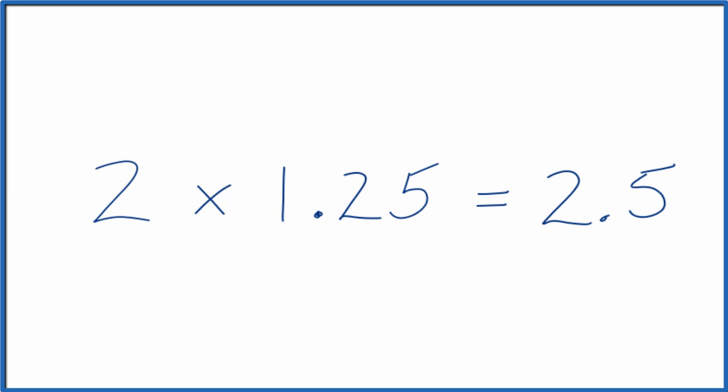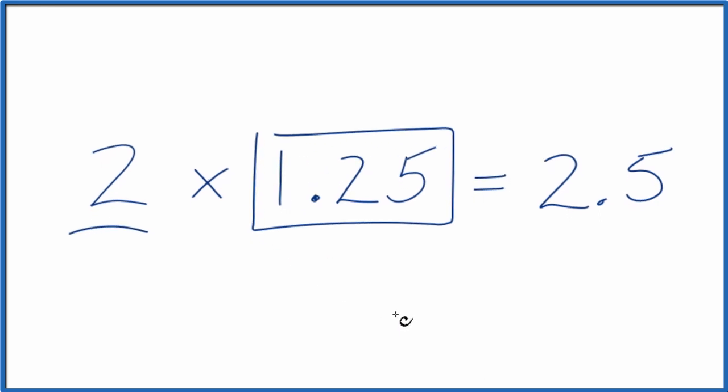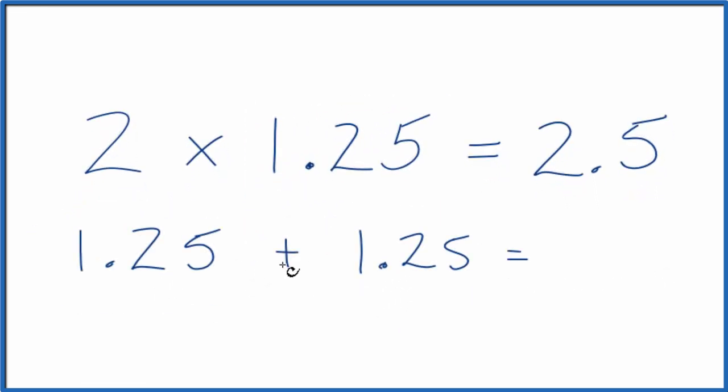The other way to think about this is that we have two of these 1.25s. So we could just write 1.25 plus 1.25, that is 2.5, which is what we found before.